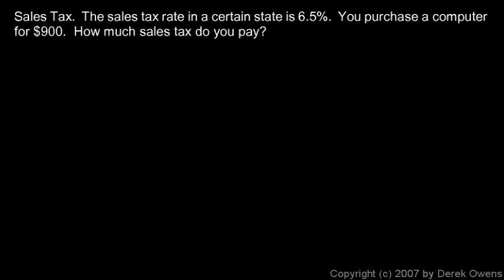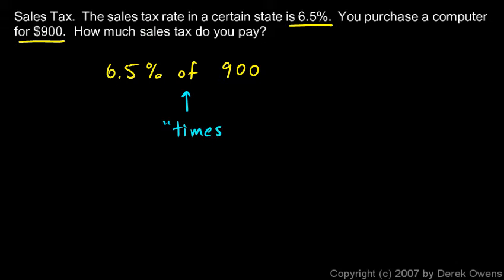You have to pay 6.5% of this total amount. So I'm going to think of the problem like this: 6.5% of 900. And remember that 'of' means times. So this is 6.5%, which is 6.5 hundredths, times 900. And that will be my answer.